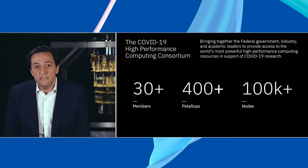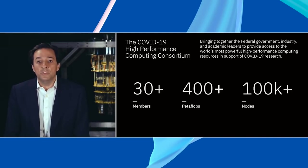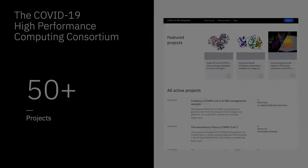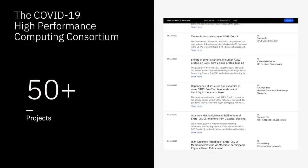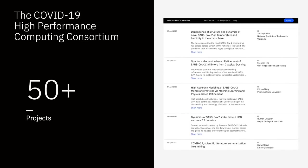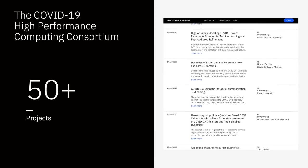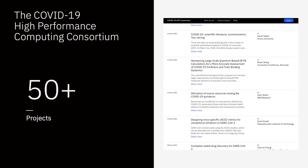In moments of crisis, it is particularly important that we all come together. And that's why we were very proud to coalesce and create in partnership with the federal government and other institutions in the tech sector, as well as academia, the COVID-19 High Performance Computing Consortium, where 30-plus members have aggregated over 400 petaflops of computing power and over 100,000 nodes to pursue a broad portfolio of projects that can help us understand the pandemic, understand the evolution of the virus, and accelerate the pace at which we can develop antivirals and ultimately vaccines.